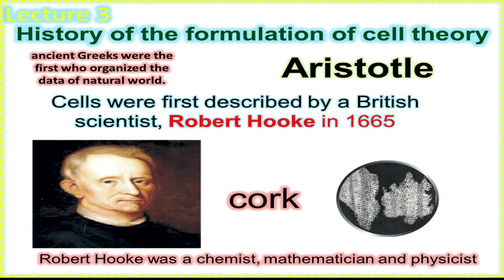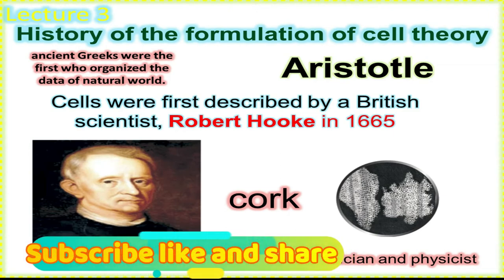Robert Hooke was a chemist, a mathematician, and a physicist. He created many new machines and mechanical devices. These included a timepiece, a quadrant, and a Gregorian telescope. He was a multi-talented scientist whose contributions extended well beyond his discovery of cells.